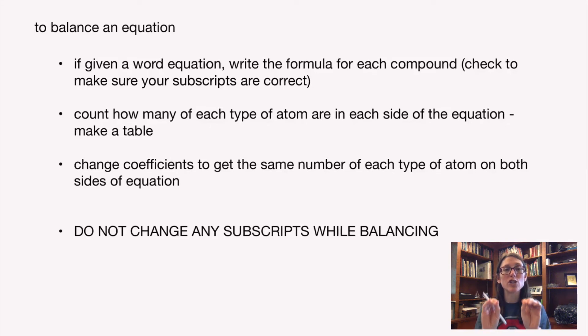Then you change the coefficients, the numbers in front of the formulas. Never change the subscripts—that would change what the chemical is. We're not trying to change what the chemical is, we're just trying to balance the equation. So change coefficients in order to have the same number of each element on both sides of the chemical reaction.